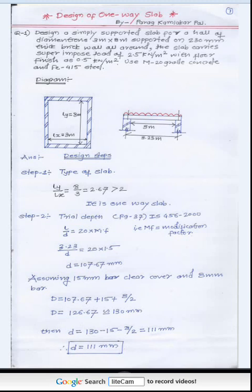Step 1: Determine which type of slab it is — one-way slab or two-way slab. To determine the type, we calculate the aspect ratio Ly/Lx. If this ratio is greater than 2, it is a one-way slab. If less than 2, it is a two-way slab. Our aspect ratio Ly/Lx = 2.67, which is greater than 2, so it is a one-way slab.